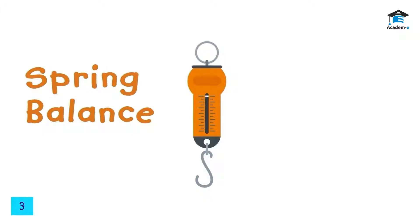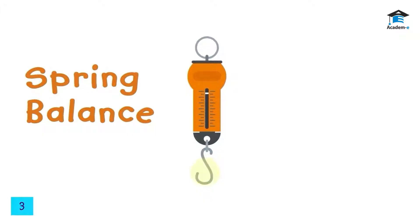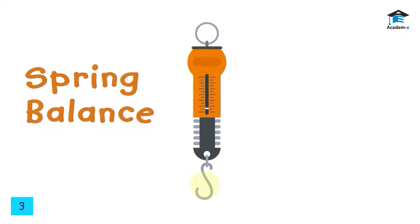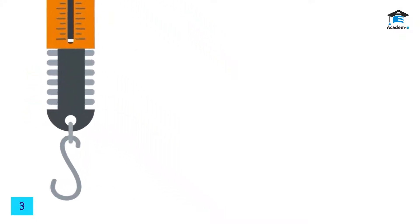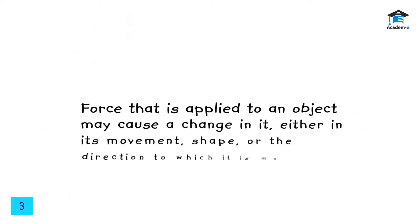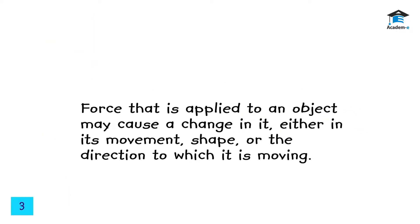A spring balance contains a spring connected to a metal hook. When a force is applied to the hook, the spring stretches. The greater the force you apply, the longer the stretch of the spring, and the greater the reading on the device. The unit of force is called the newton.